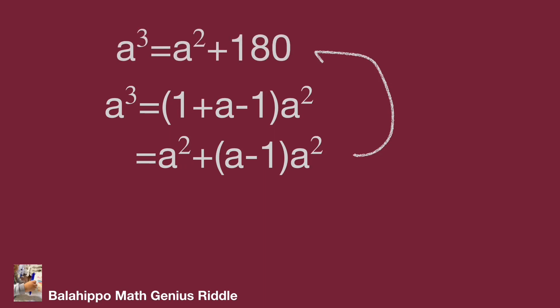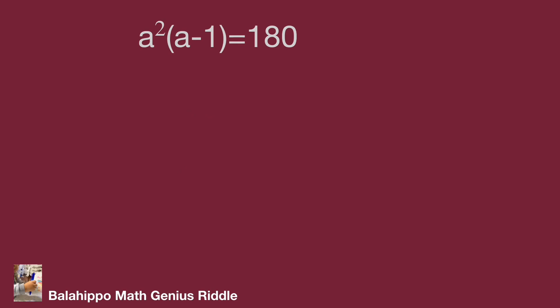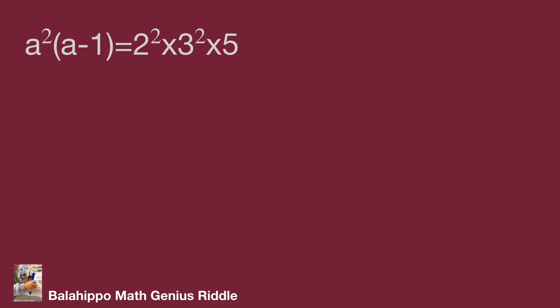I'm going to make the connection with the equation a³ equals a² plus 180. Comparing these equations: a² plus 180 equals a² plus (a minus 1) times a². Therefore, 180 equals (a minus 1) times a². Now, 180 equals 2² times 3² times 5.